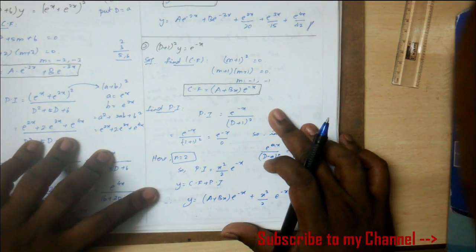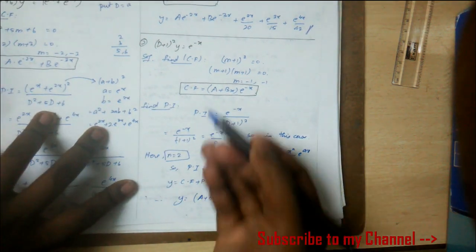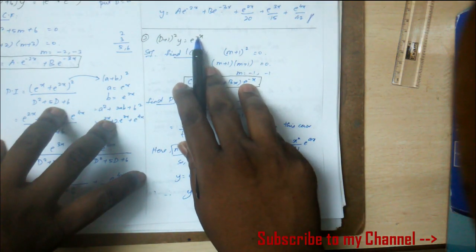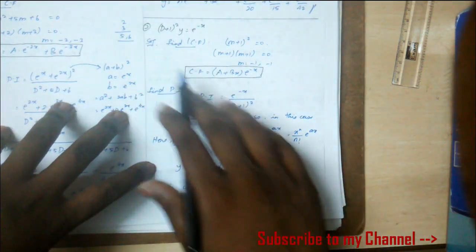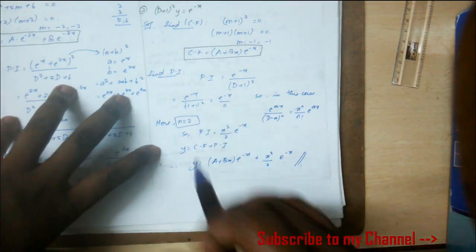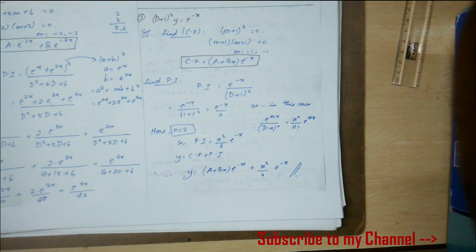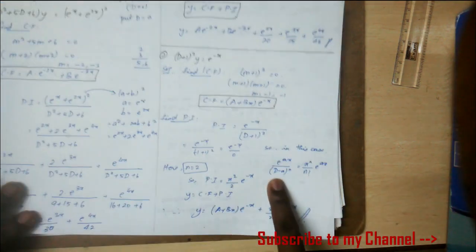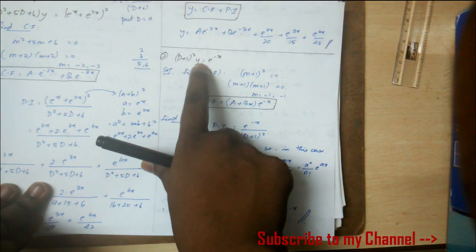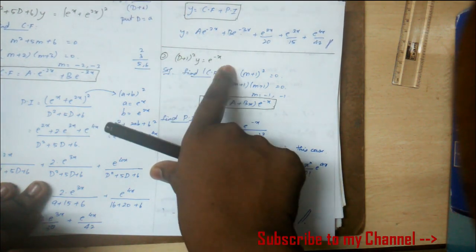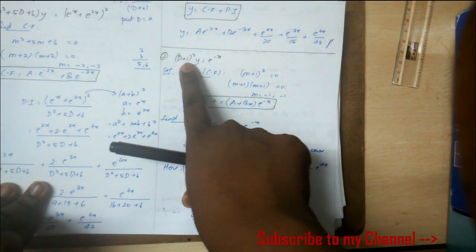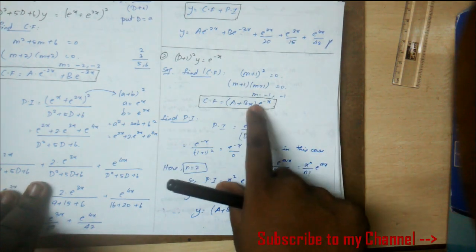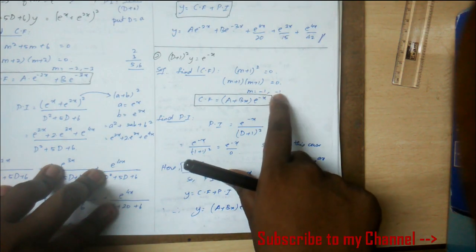The second type: if you have e^(ax) and a appears in the operator like D - a = 0, then the case is different. Here's an example: (D + 1)²y = e^(-x). For CF, (m + 1)² gives m = -1, -1.